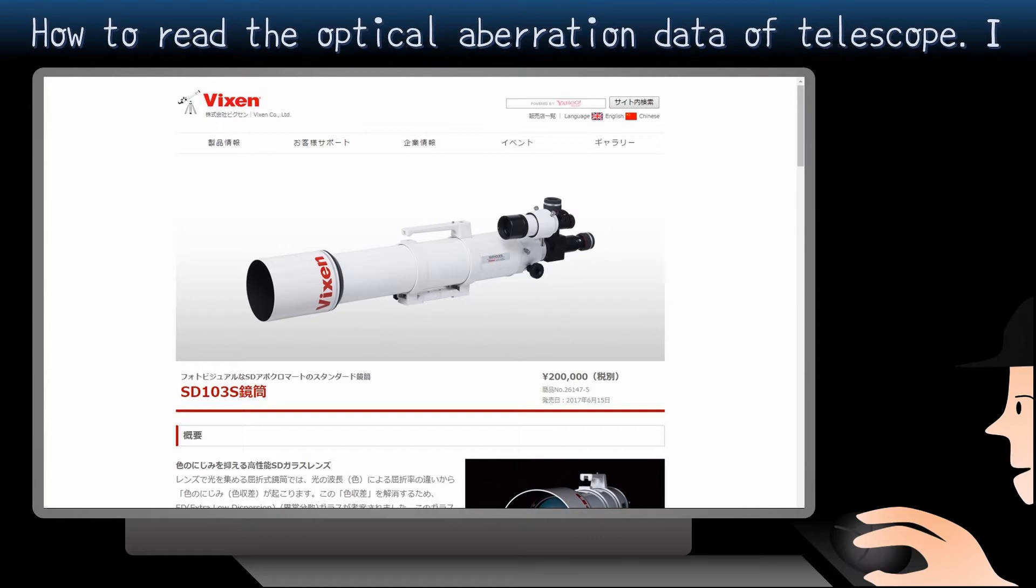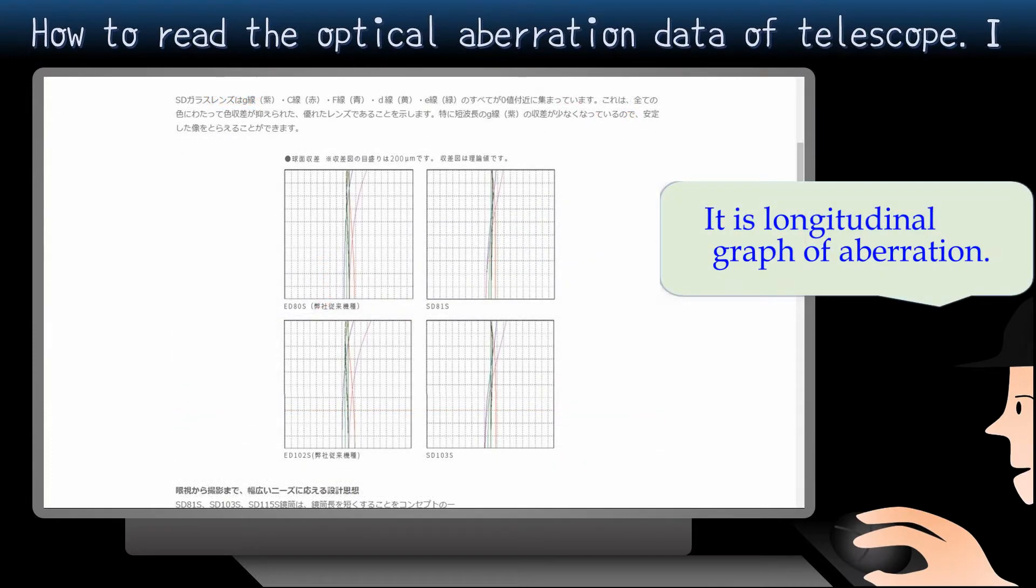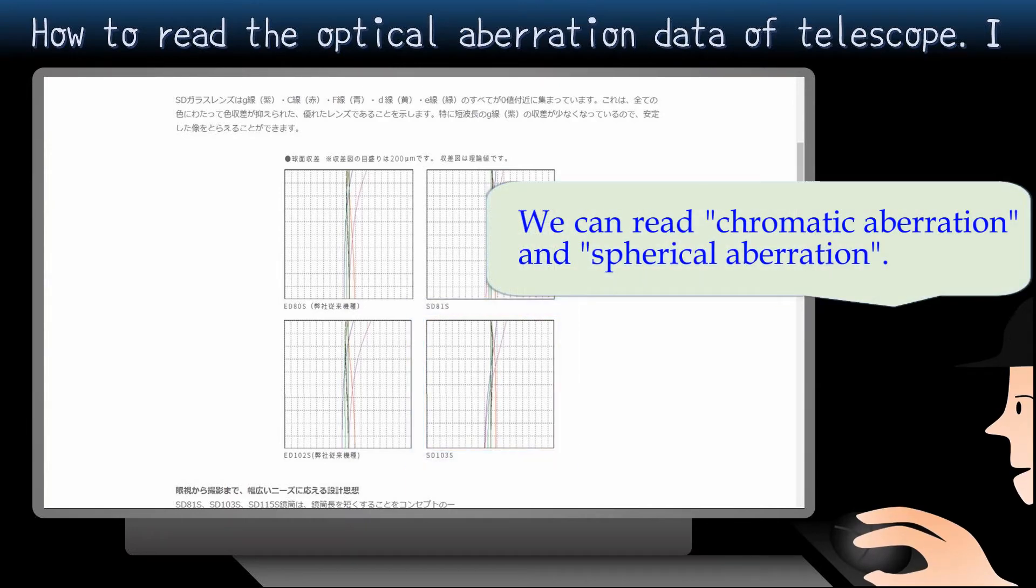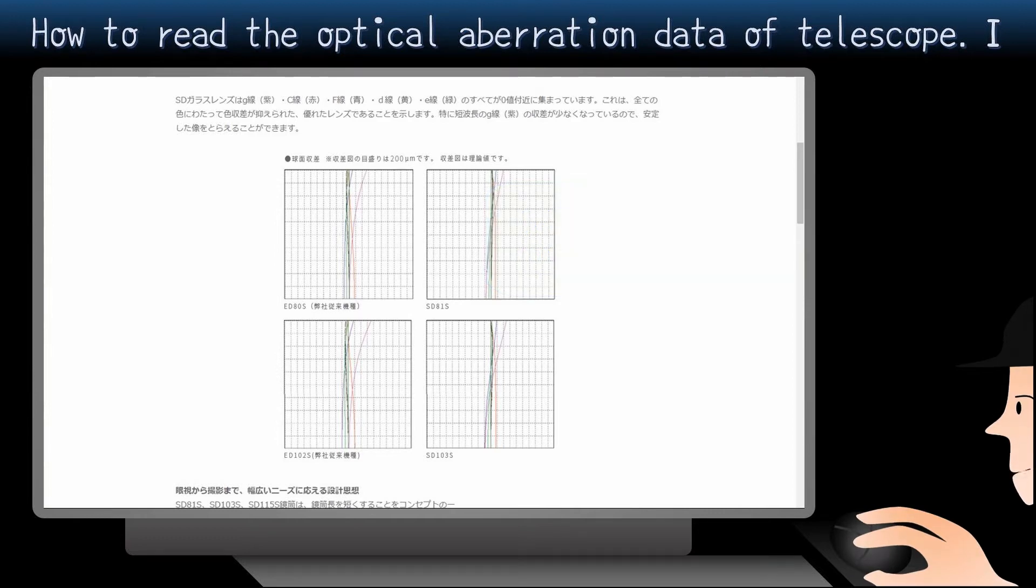This is a new model for connecting with full-frame digital cameras. And then, this is the longitudinal graph of aberration. The lower right one is the graph of SD-103S. From this graph we can read two aberrations: one is chromatic aberration, and the other is spherical aberration. So I'll explain these two.